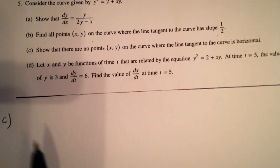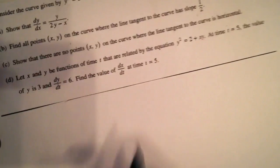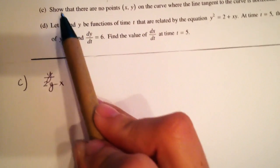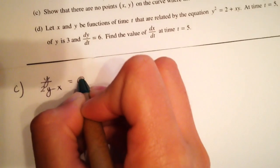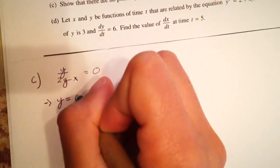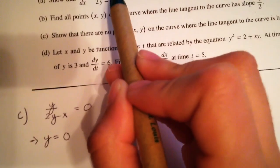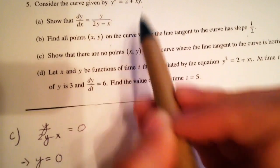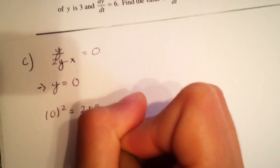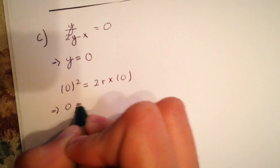Now for part C, we need to demonstrate that there are no points on the curve where the tangent is horizontal. We set the derivative y over 2y minus x equal to 0, which implies that y must equal 0, provided 2y minus x does not equal 0. We substitute y equals 0 back into the original equation y squared equals 2 plus xy.